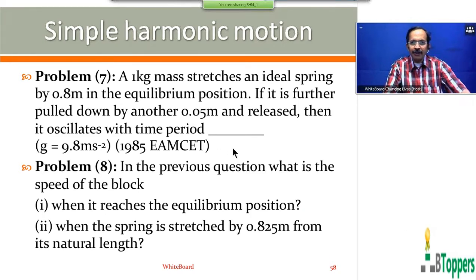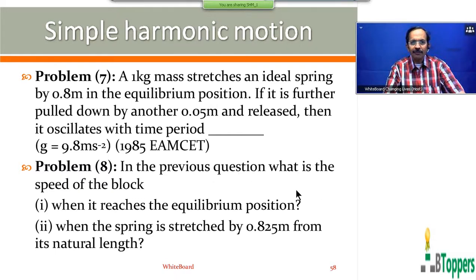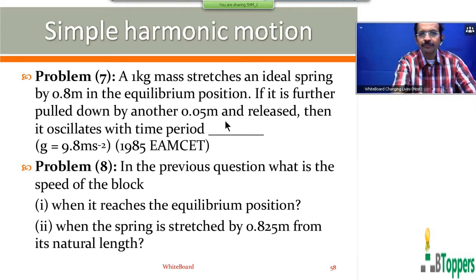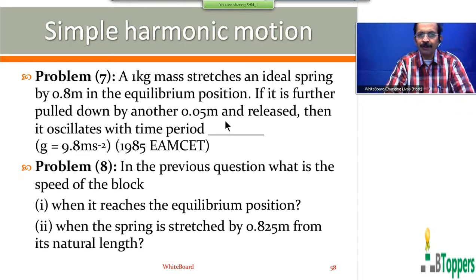We will read both equations again. A 1 kg mass stretches an ideal spring by 0.8 meters in the equilibrium position. It is further pulled down by another 0.05 meters and released, then it oscillates with a certain time period. The amplitude of oscillation will be 0.05 meters.